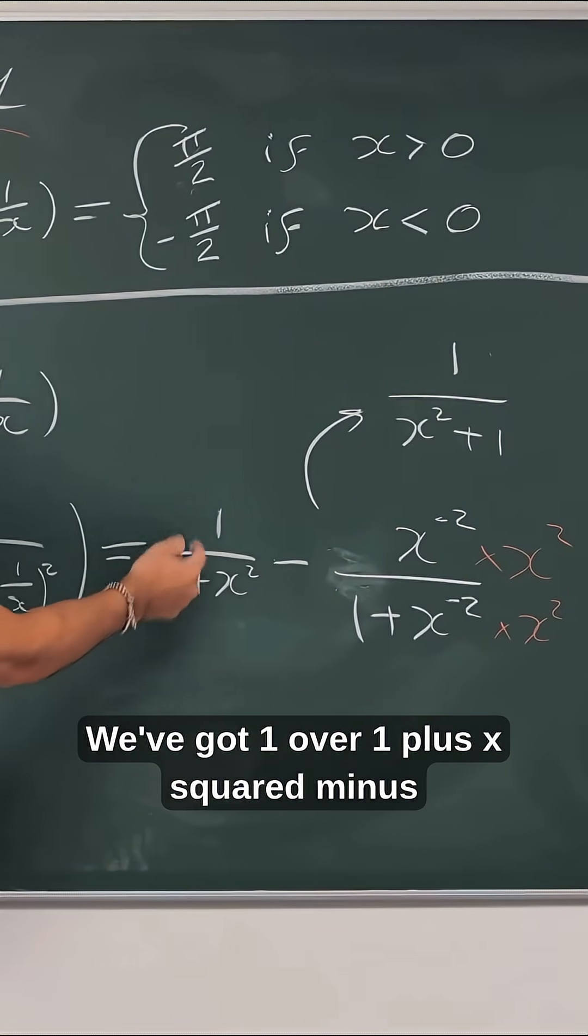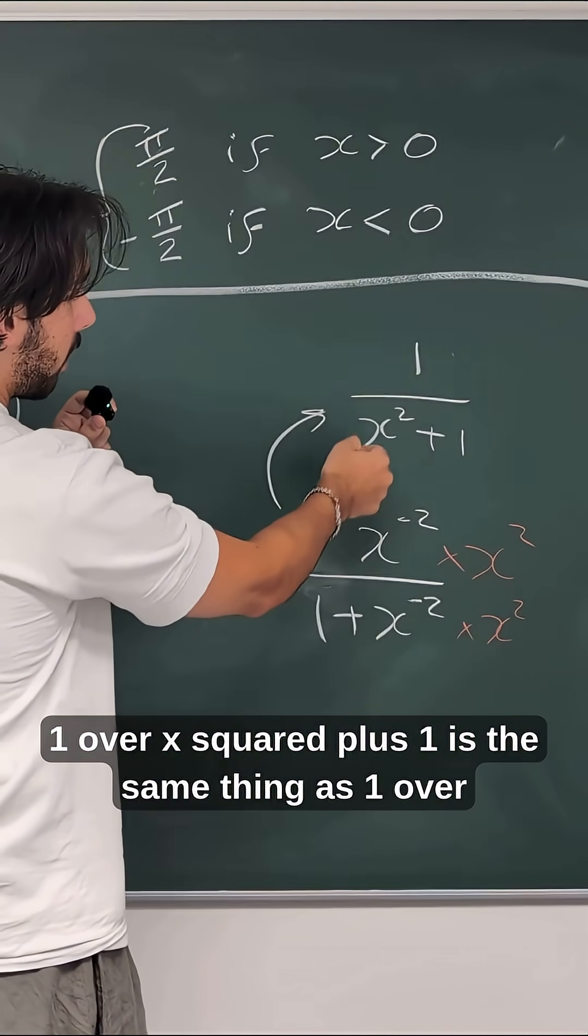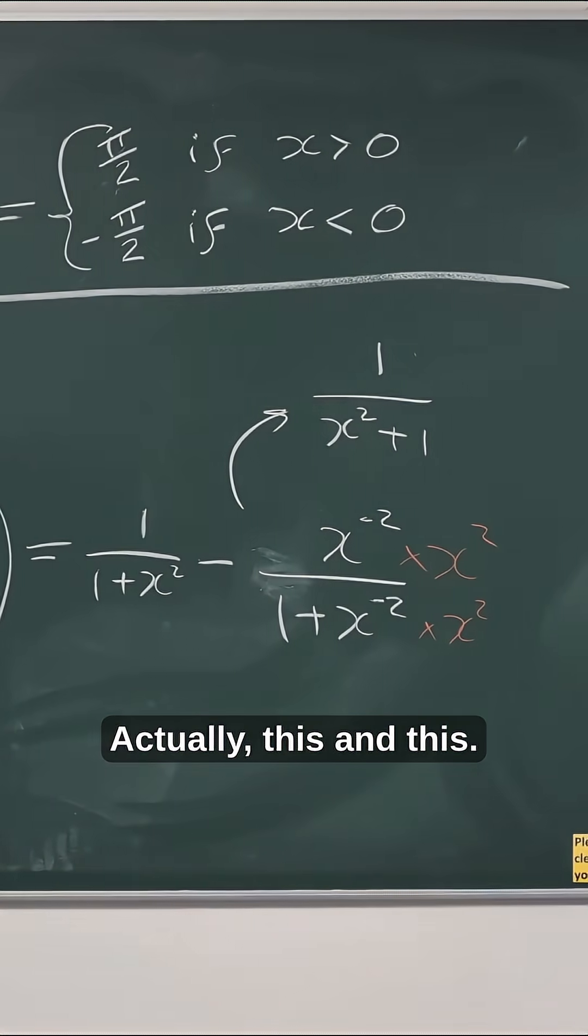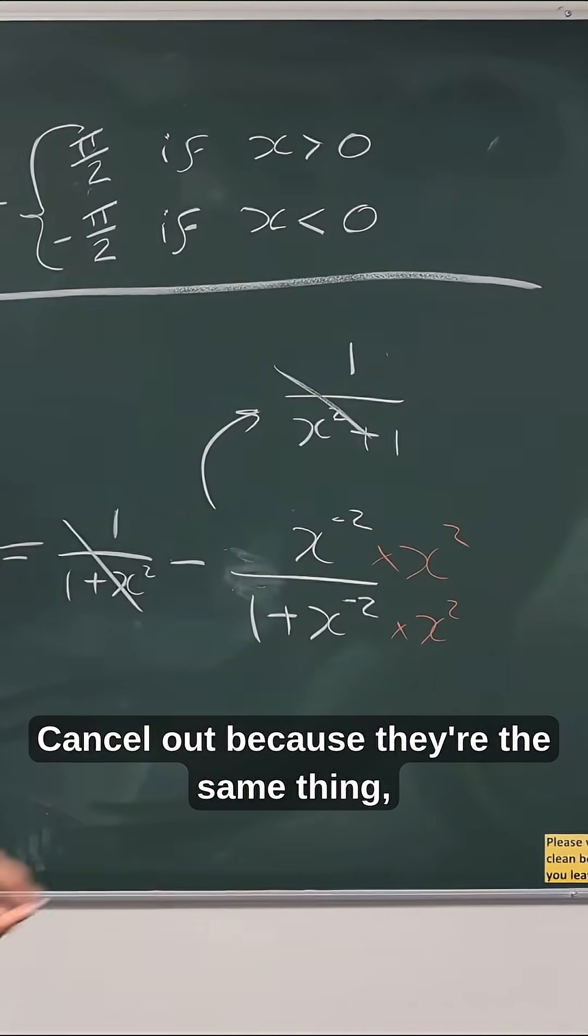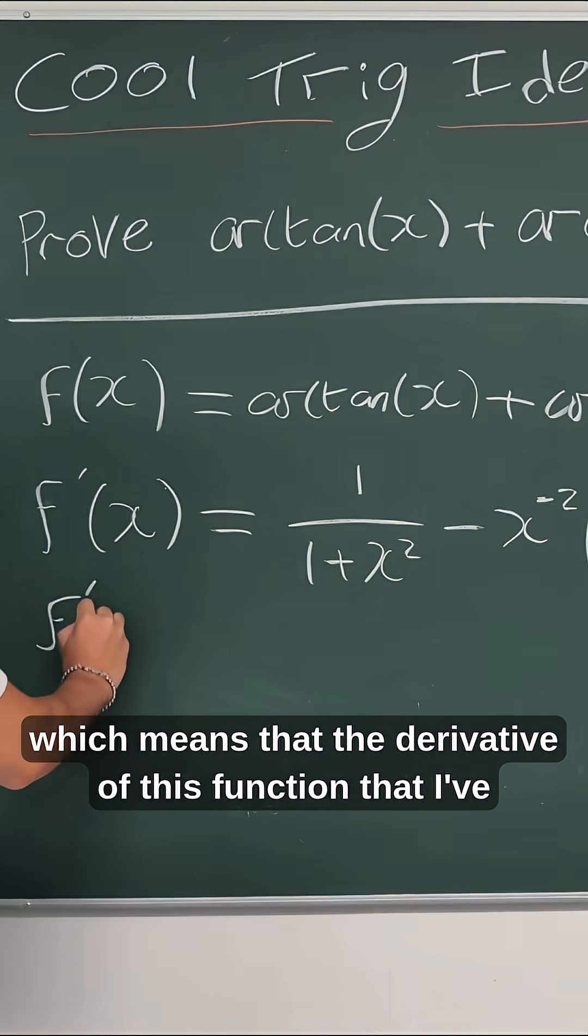We've got the same thing here. We've got 1 over 1 plus x squared minus the same thing. Obviously, 1 over x squared plus 1 is the same thing as 1 over 1 plus x squared. So actually, this and this cancel out because they're the same thing, which means that the derivative of this function that I've made up is actually 0.